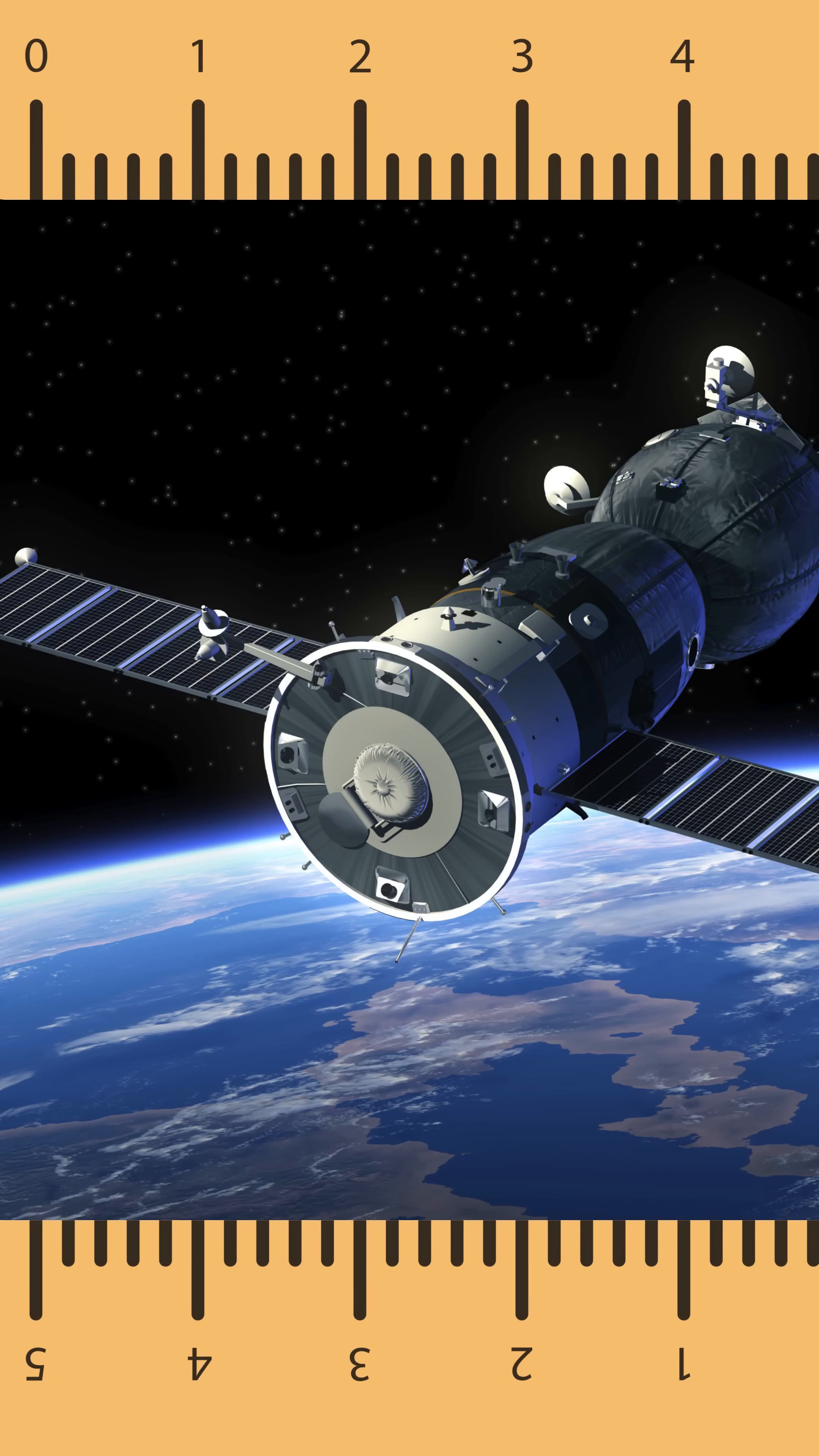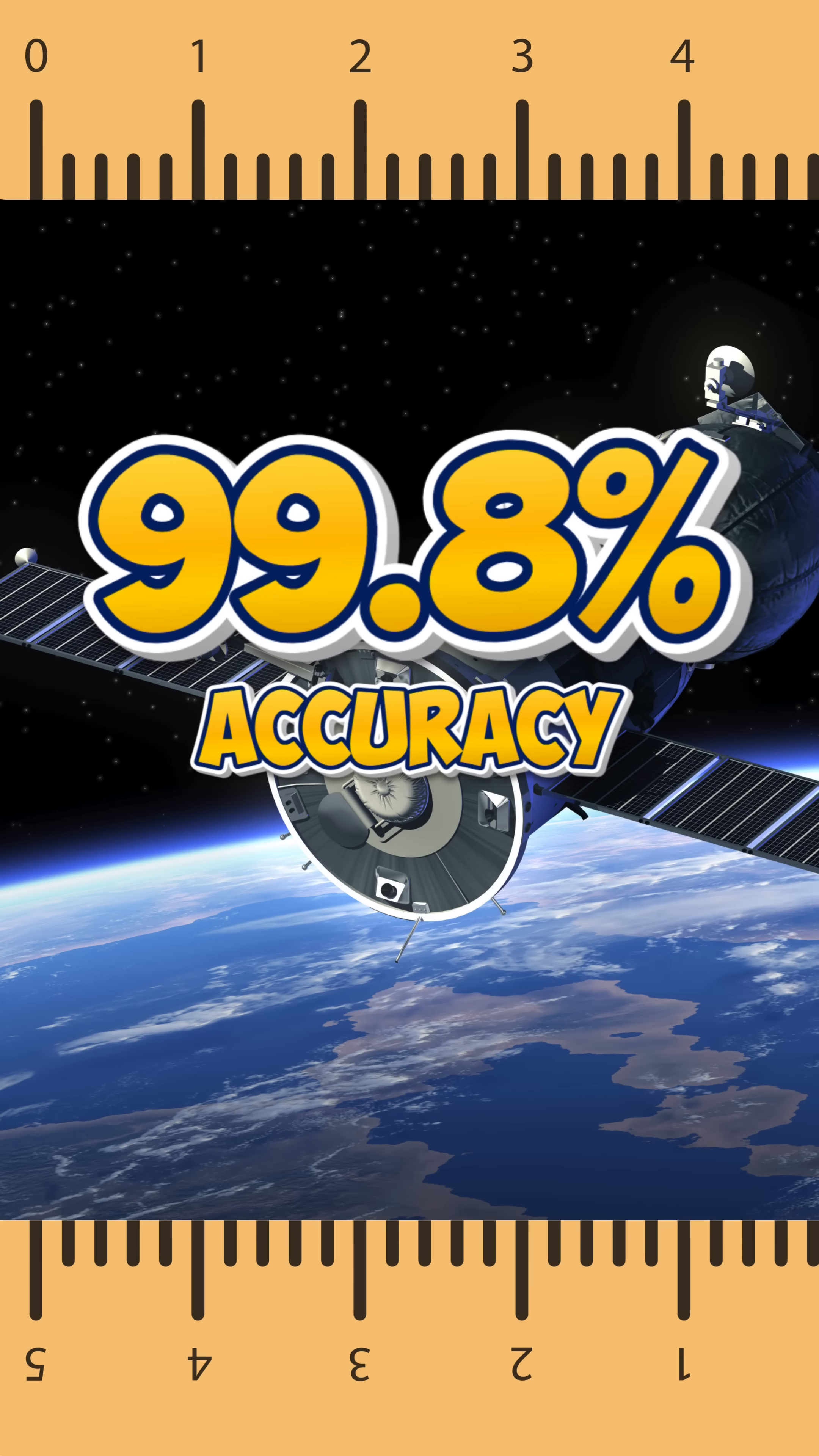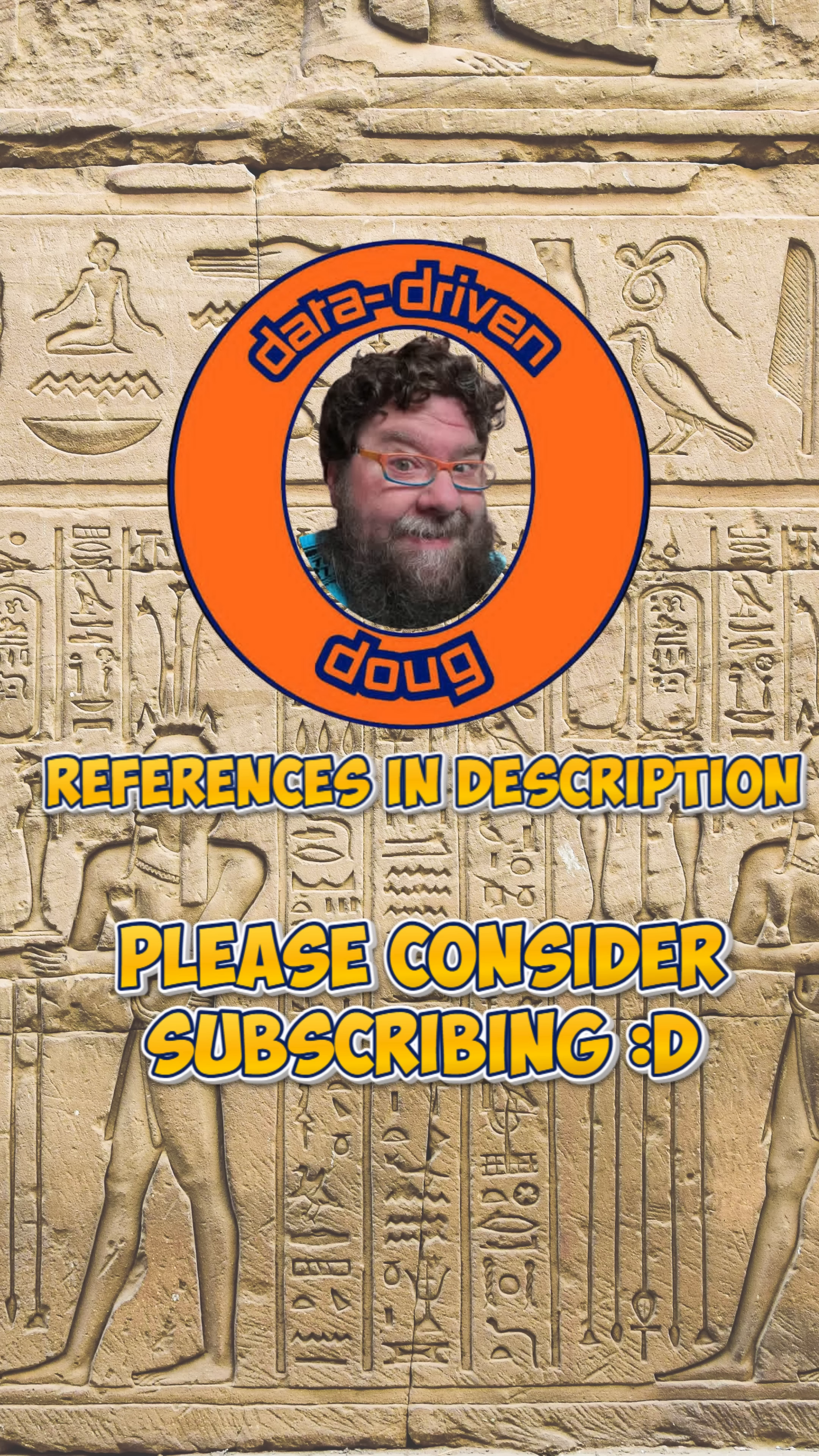The modern satellite accurate measurement is 40,075 kilometers. Eratosthenes' accuracy was 99.8%.